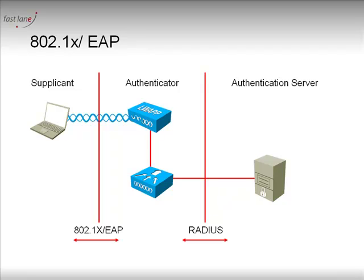As a side note, please notice that the client — the supplicant — is going to use an 802.1x and EAP dialog with the authenticator. And the authenticator is going to translate this 802.1x and EAP dialog into RADIUS to forward this request and the answers to the authentication server.